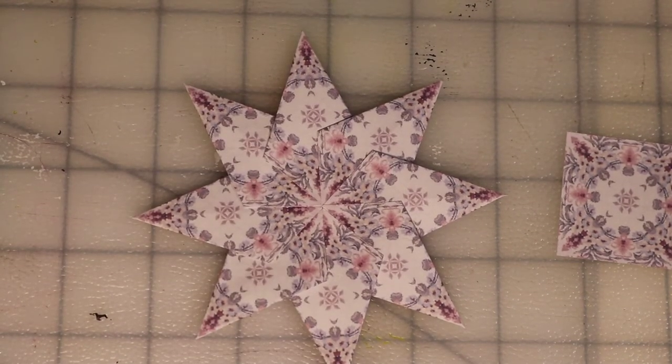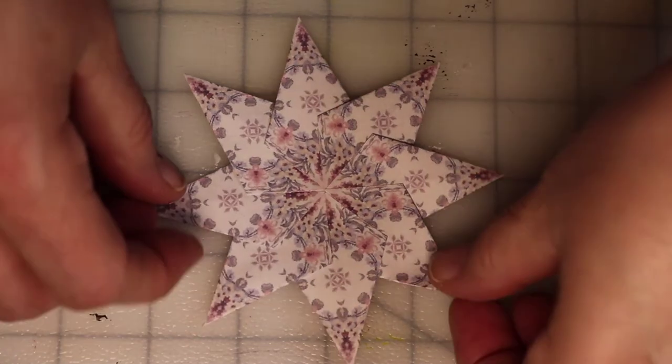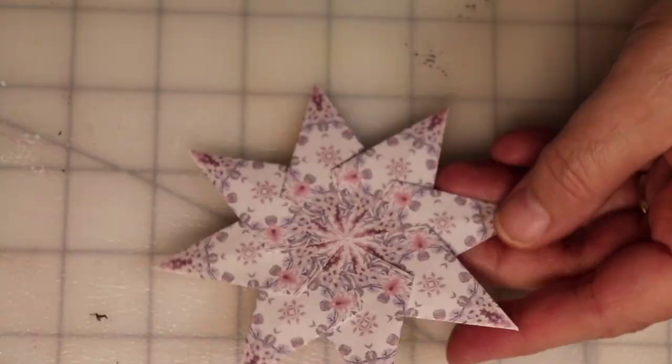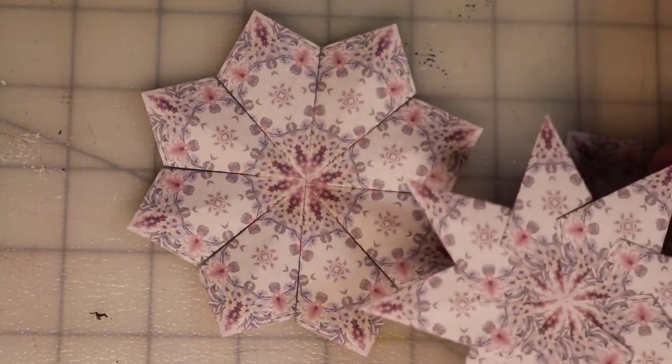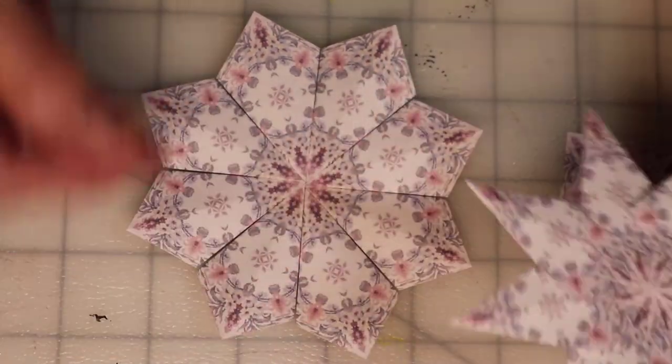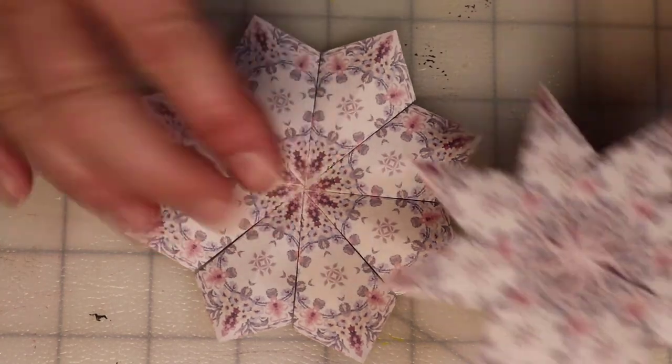So we have one star that looks like this and the other one that looks like this. Just depends on which way you point. If you put the skinny end in or the fat end in.